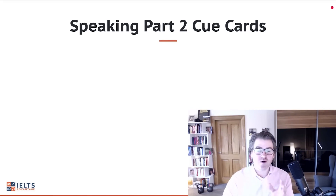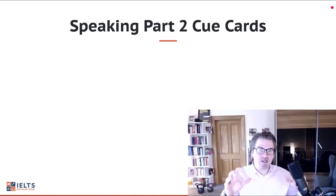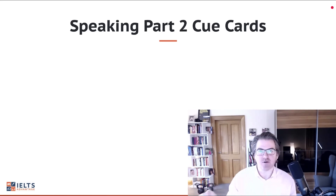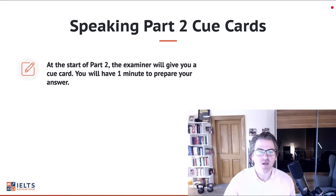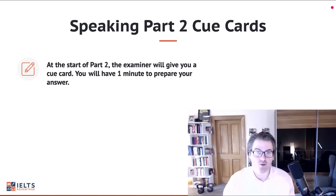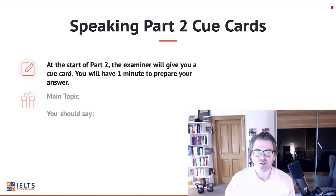First, we need to look at part two cue cards — particularly the format of those cue cards — because this is going to give us the information we need to understand the main problems, what the secret is, and help you implement our strategy. At the start of part two, the examiner will give you a cue card and you'll have one minute to prepare your answer, then you'll be expected to speak for up to two minutes. Don't worry — the examiner will stop you when you get to around two minutes.